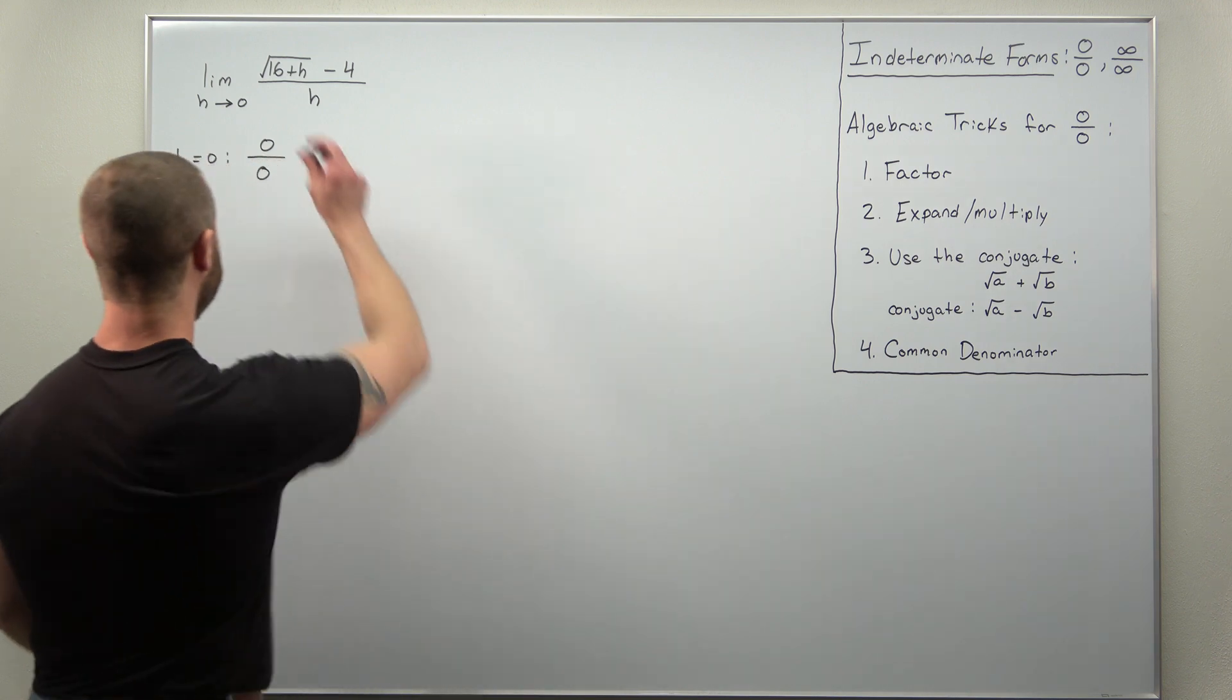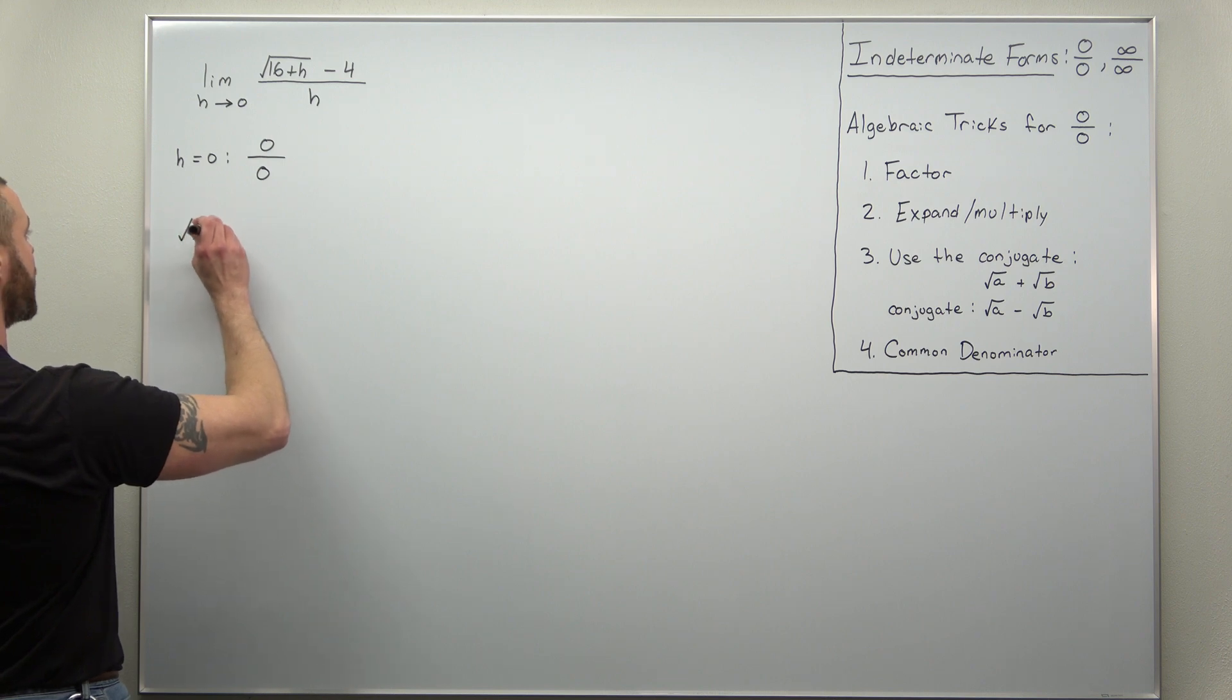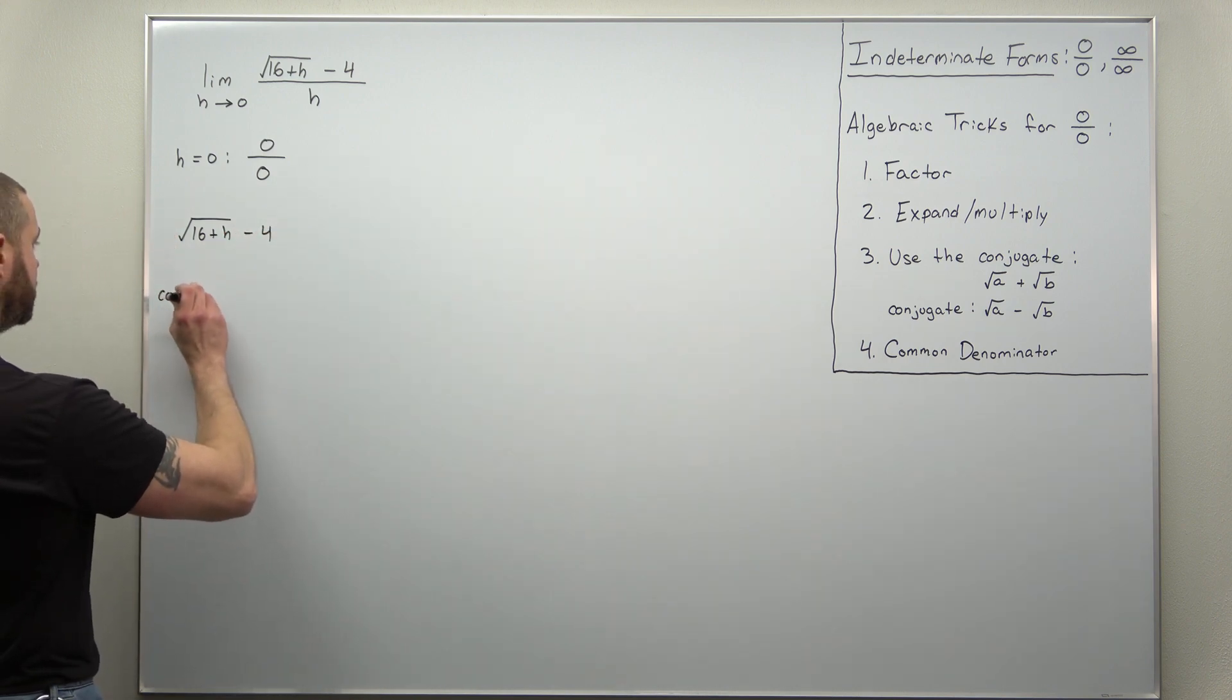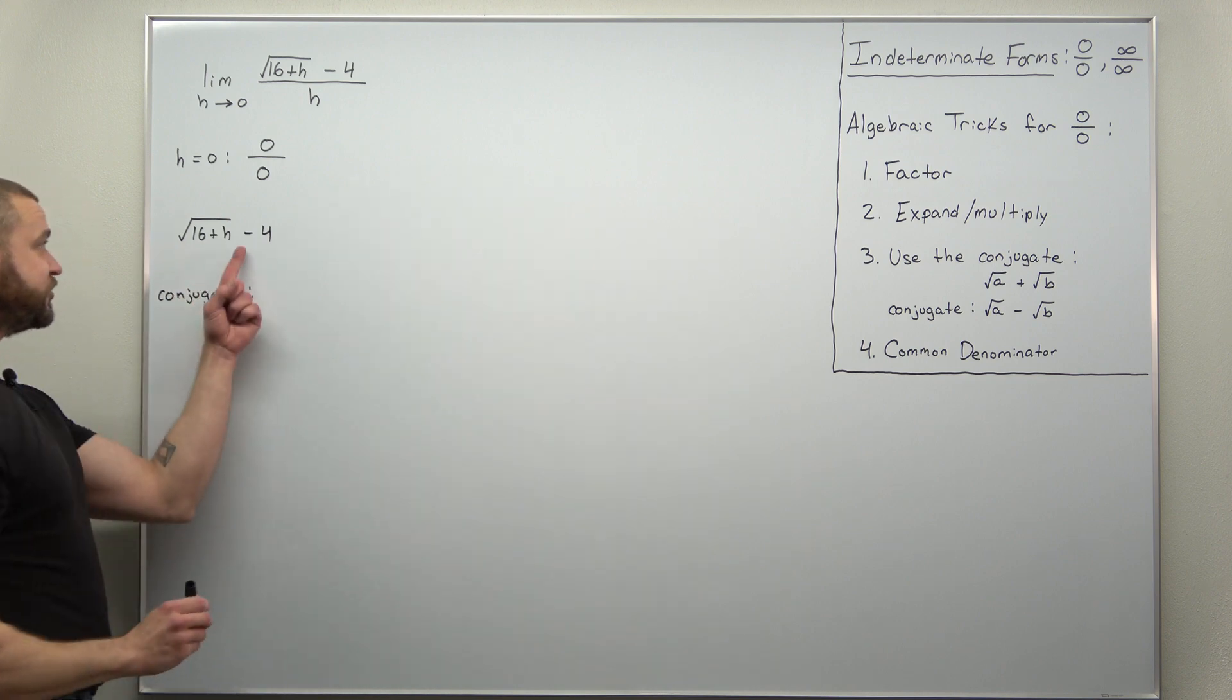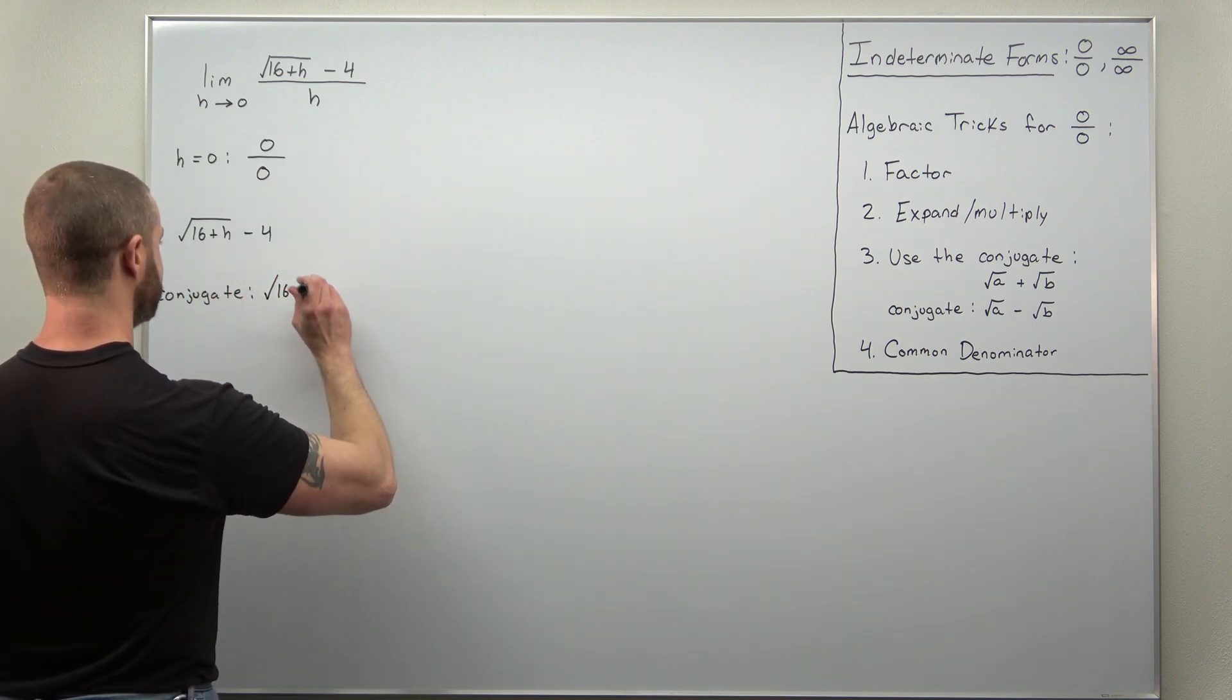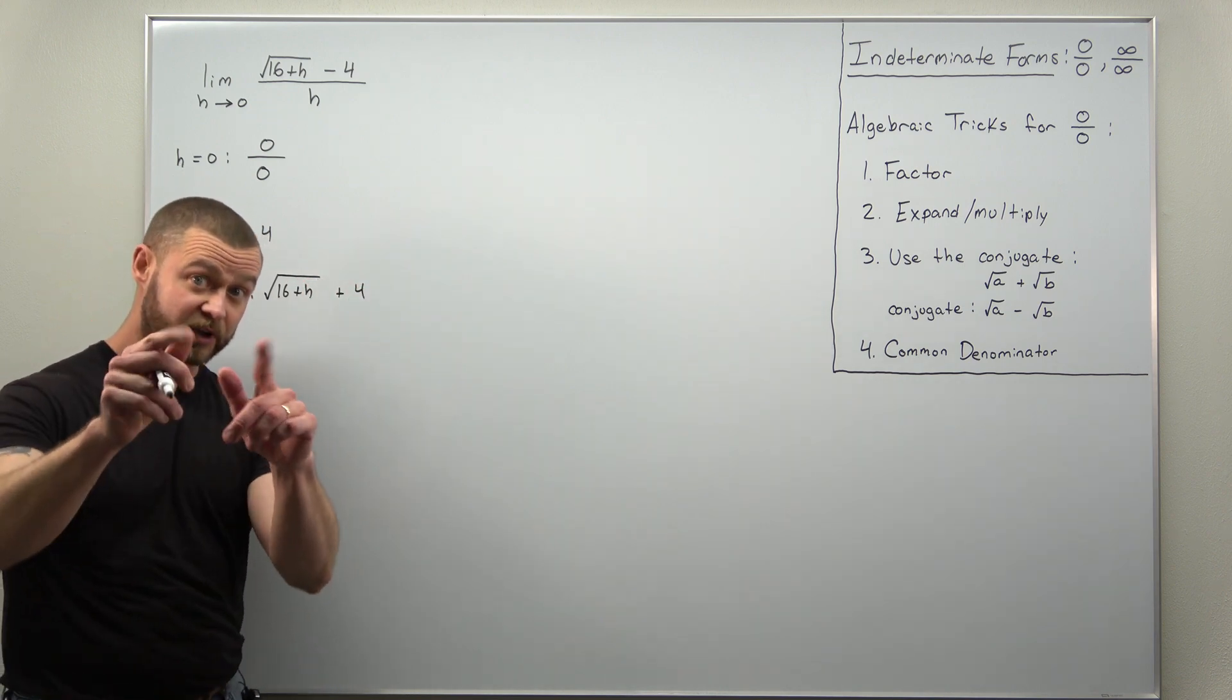So if we take a look at our numerator that contains the radical or square root, you have square root of 16 plus h minus 4. The conjugate of that, we just change the sign between the terms. So the conjugate would be the square root of 16 plus h, but plus 4.